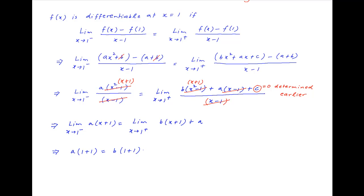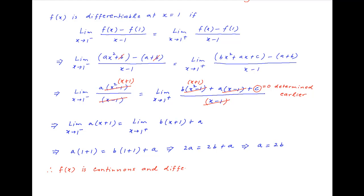The limit on the left-hand side equals a times (1 plus 1), and the limit on the right-hand side equals b times (1 plus 1) plus a. Therefore, we are left with 2a equals 2b plus a, giving a equals 2b. The given function f(x) is continuous and differentiable at x equal to 1 when a equals 2b and c equals 0.